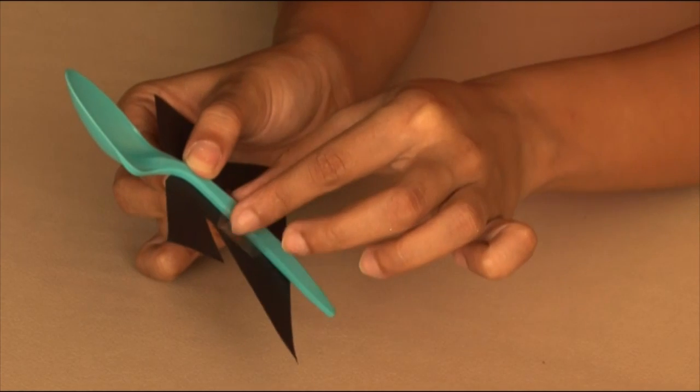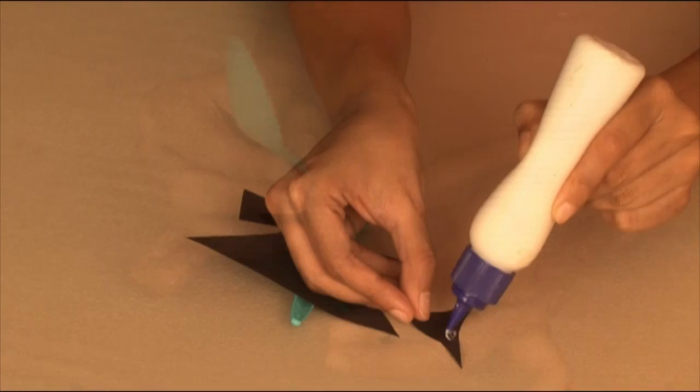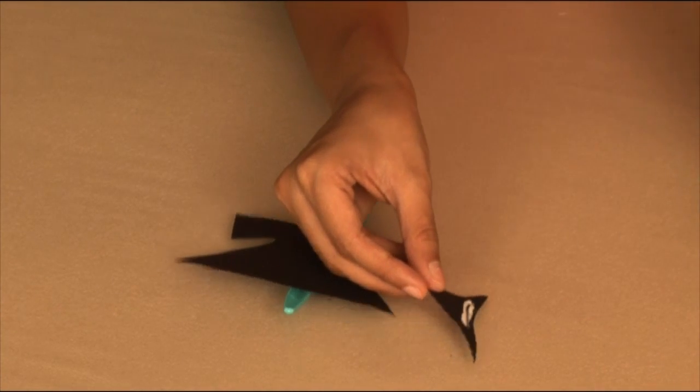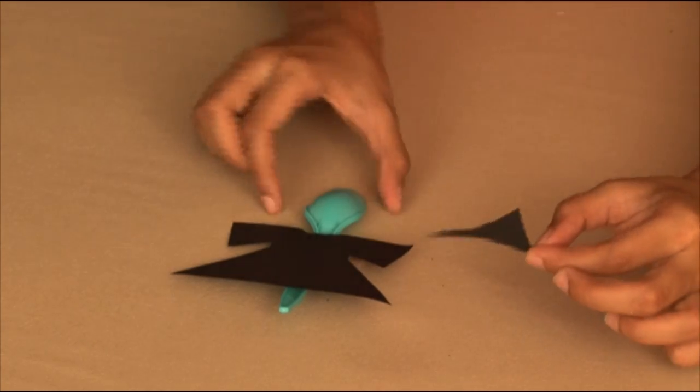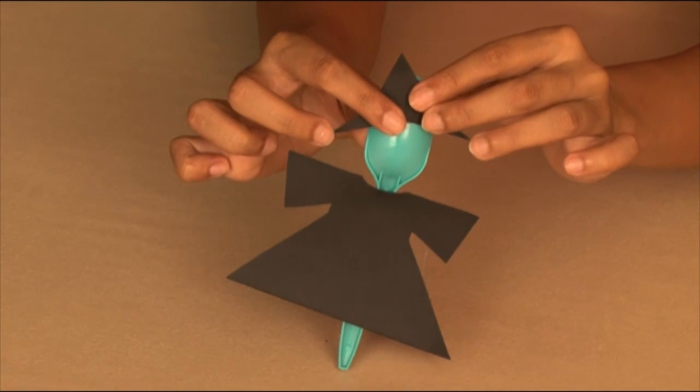I've already cut black construction paper in the shape of the witch gown and hat. Watch carefully how I stick it onto the spoon.